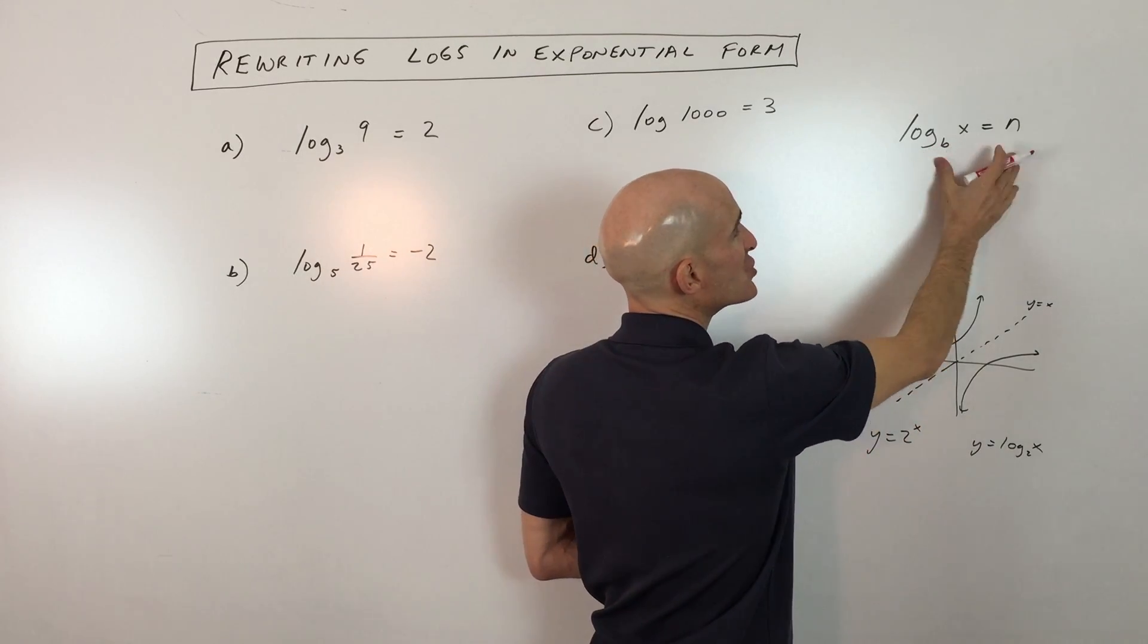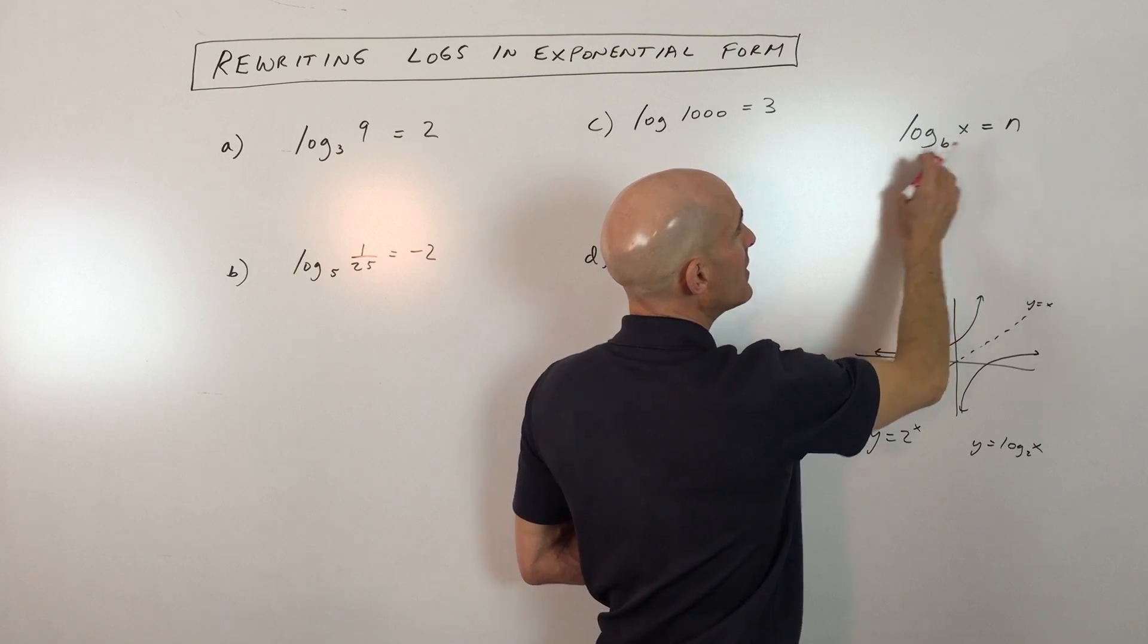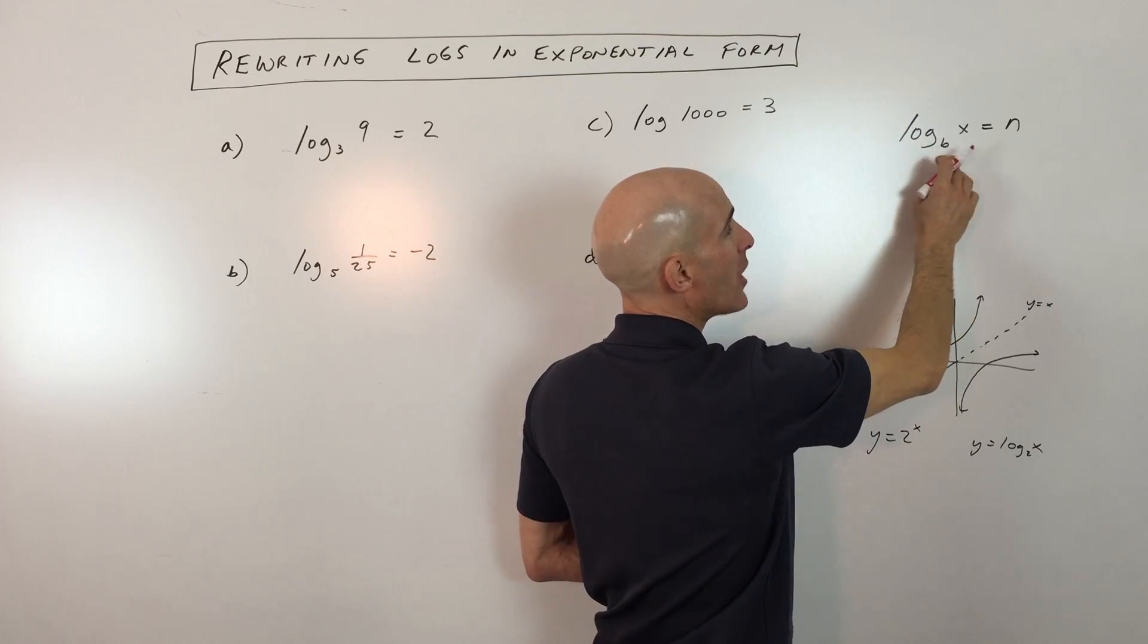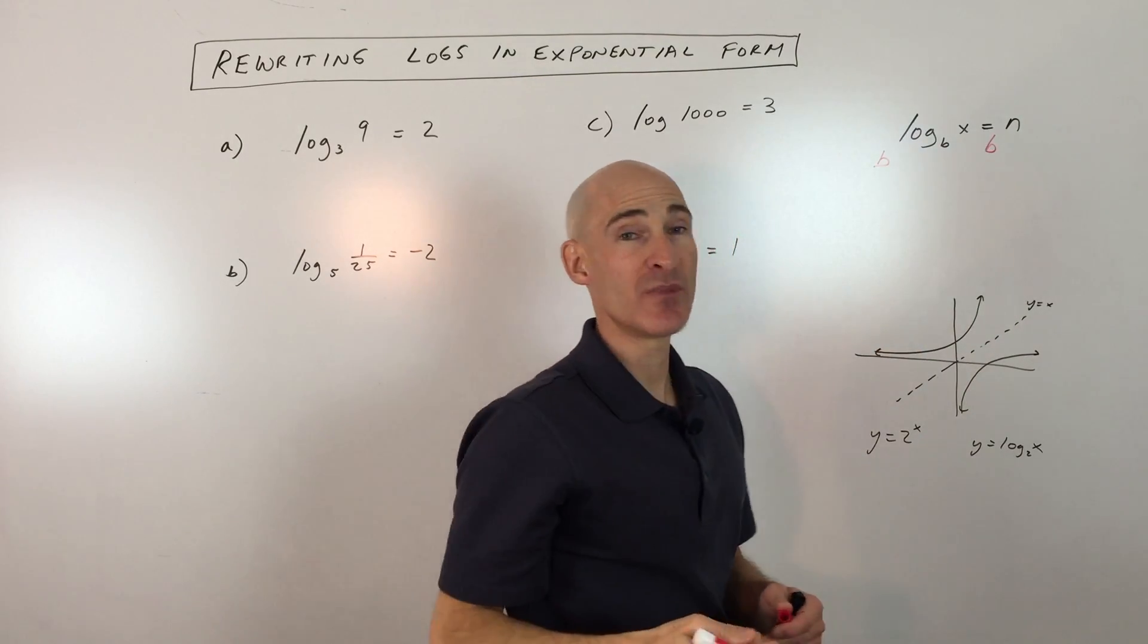So in this particular generic example, this is log base b of x equals n. So the inverse of taking the log base b is to exponentiate both sides using base b.